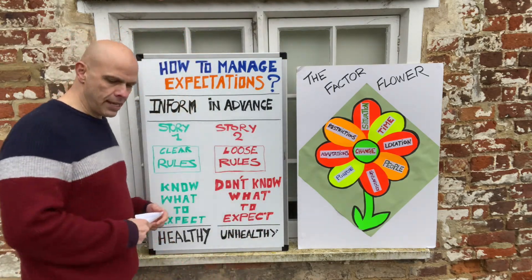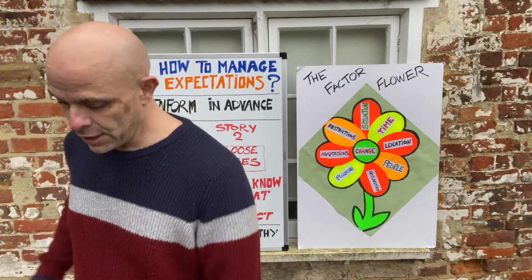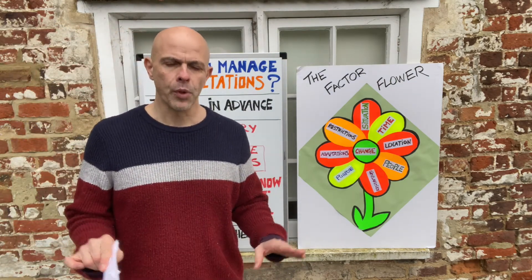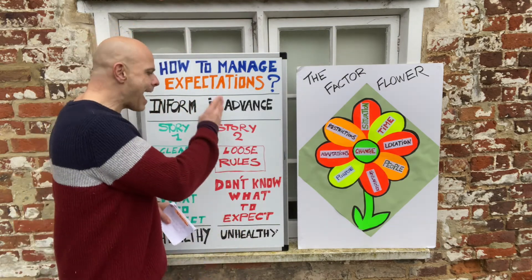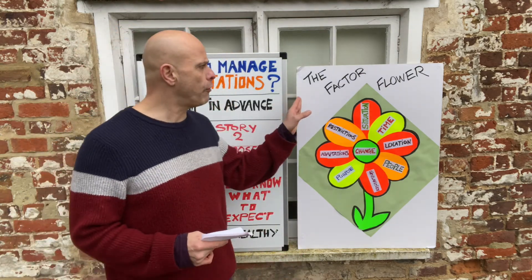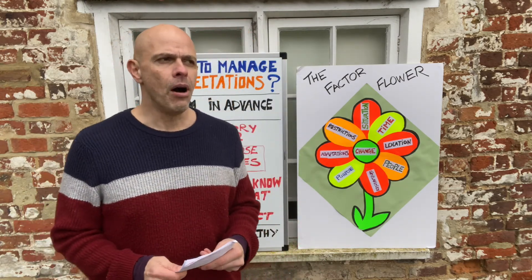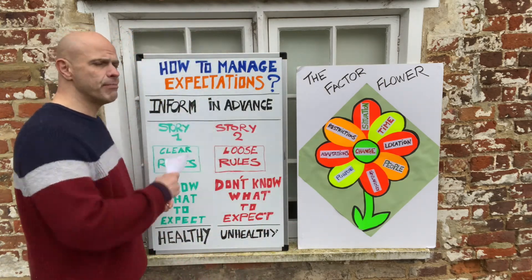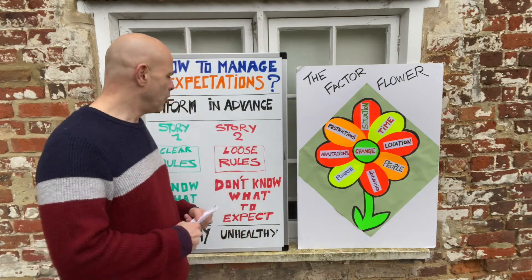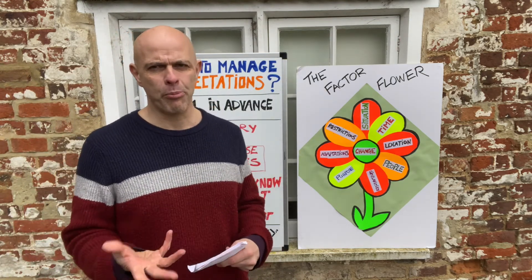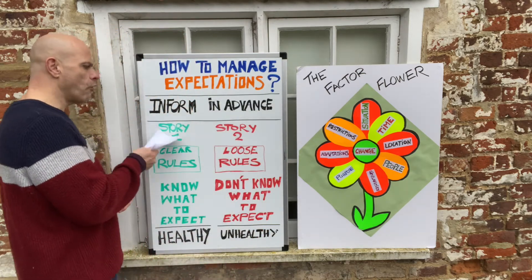Now story number two — this is a whole different ball game. This is how not to do it. We're still going to follow the Factor Flower model, but the information I'm going to give my potential guests is going to be loose, vague, airy-fairy, not very precise — the opposite of what I've done in story one.